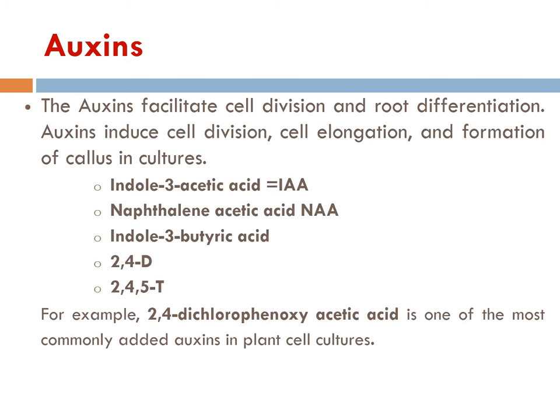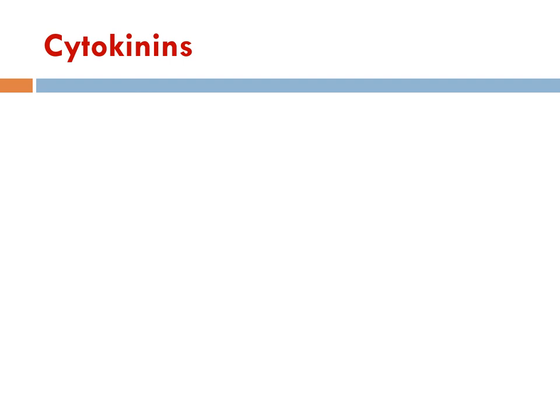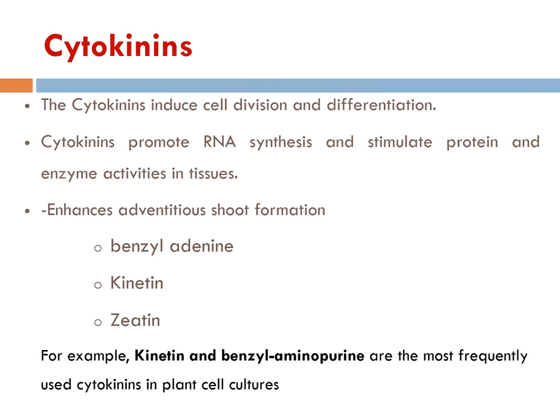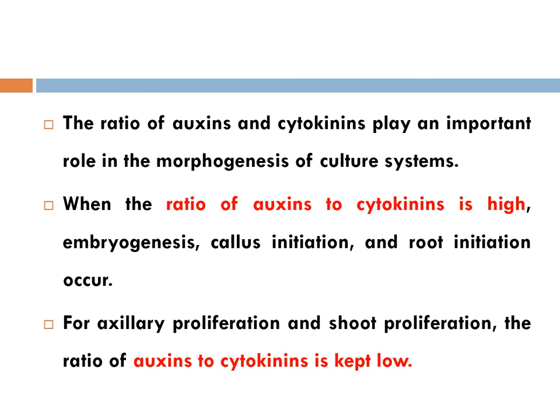Cytokinin promotes cell division, proliferation, and influences the cell cycle. It also promotes embryogenesis and inhibits root formation. The synthetic form is 2-iP, which is the most active cytokinin. Natural forms like kinetin and zeatin are mostly used in culture media. When the ratio of auxin to cytokinin is high in culture medium, embryogenesis, callus initiation, and root initiation occur. For axillary proliferation and shoot proliferation, the ratio of auxin to cytokinin is kept at low concentrations.